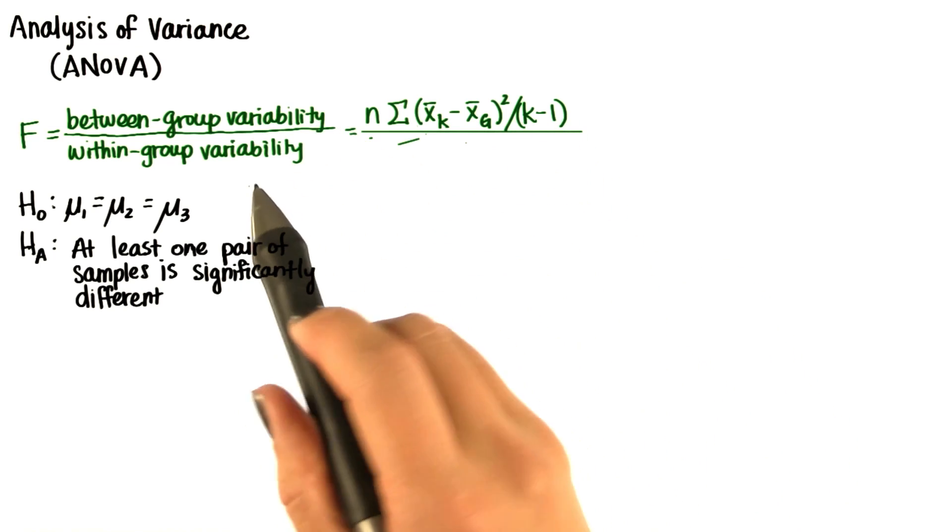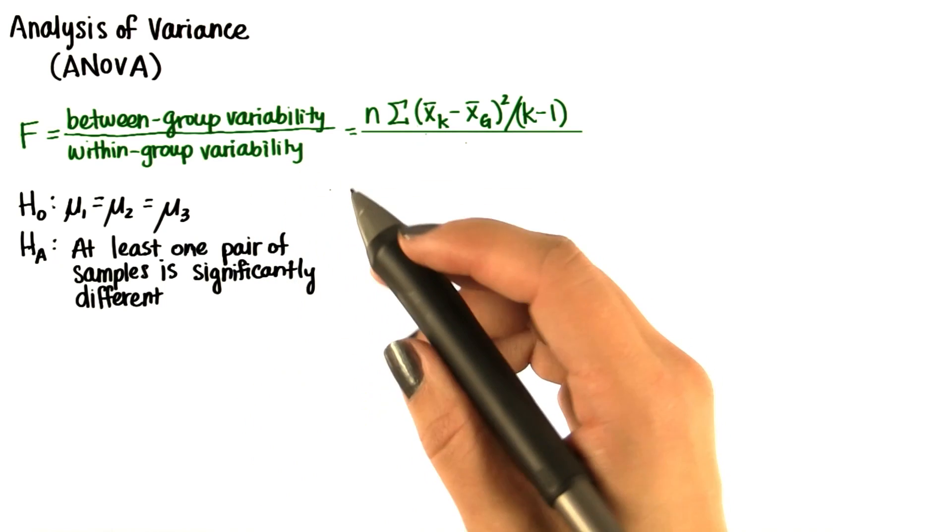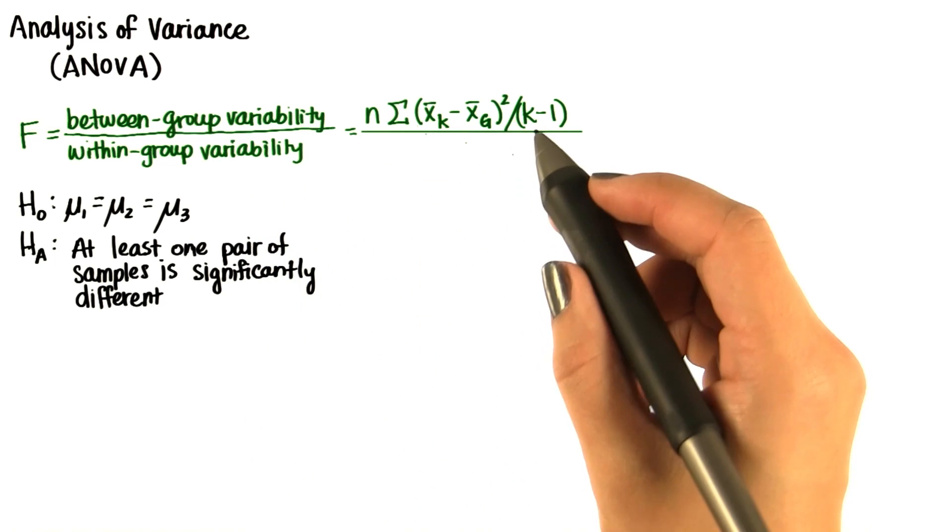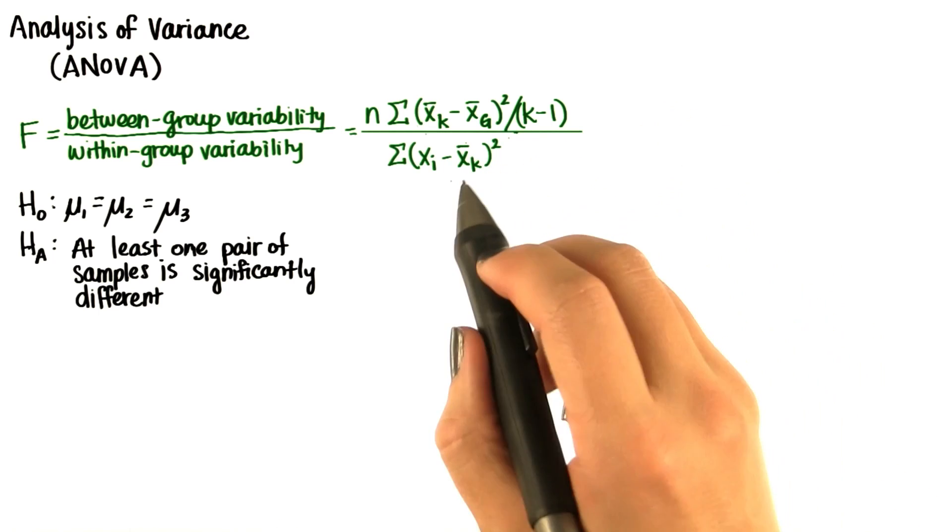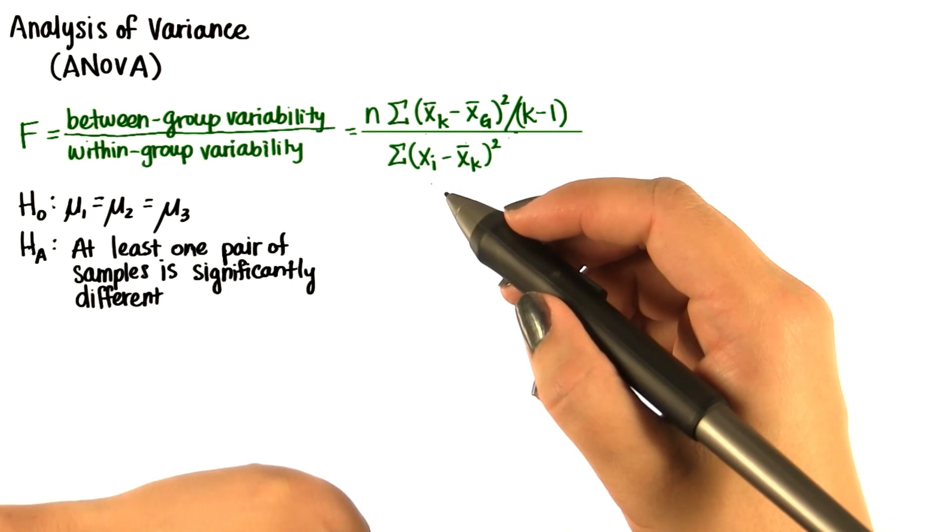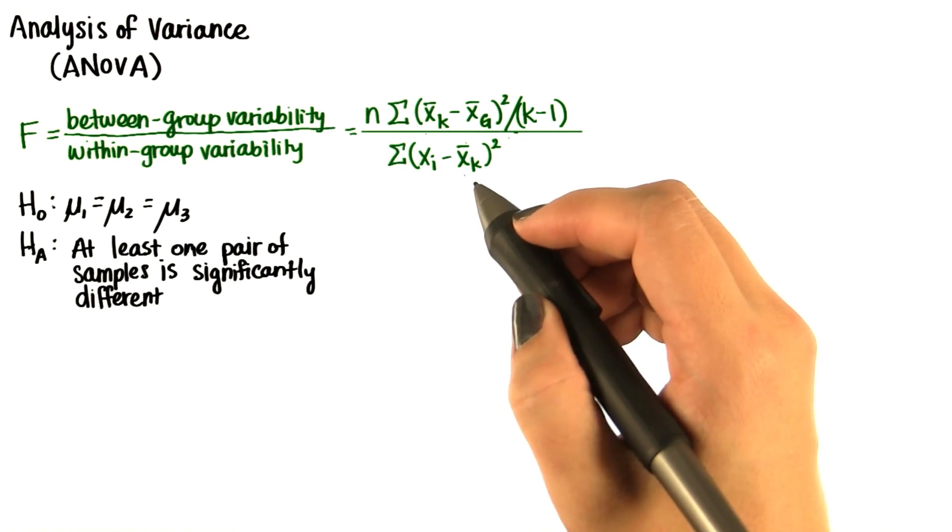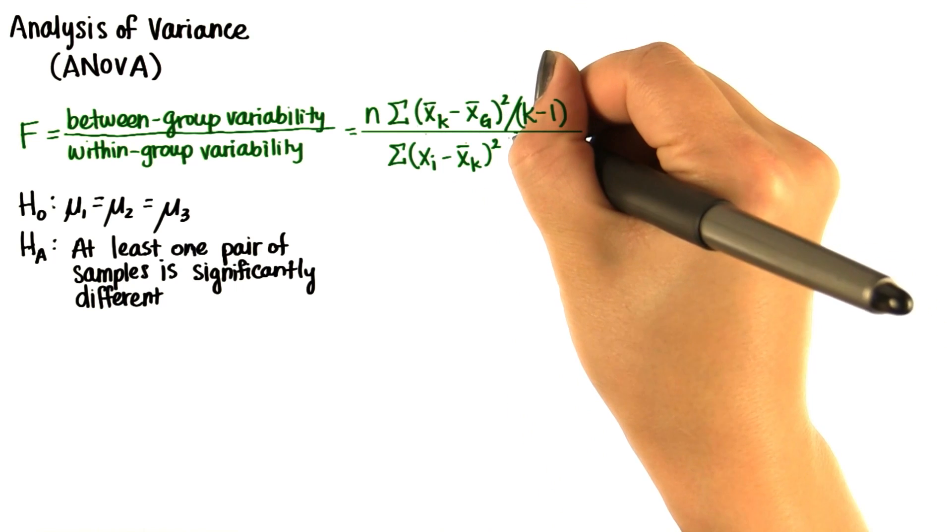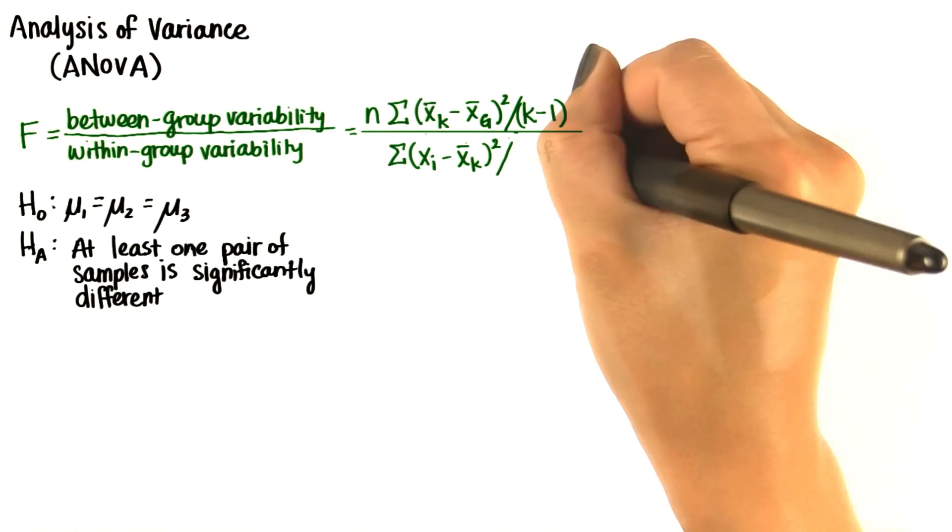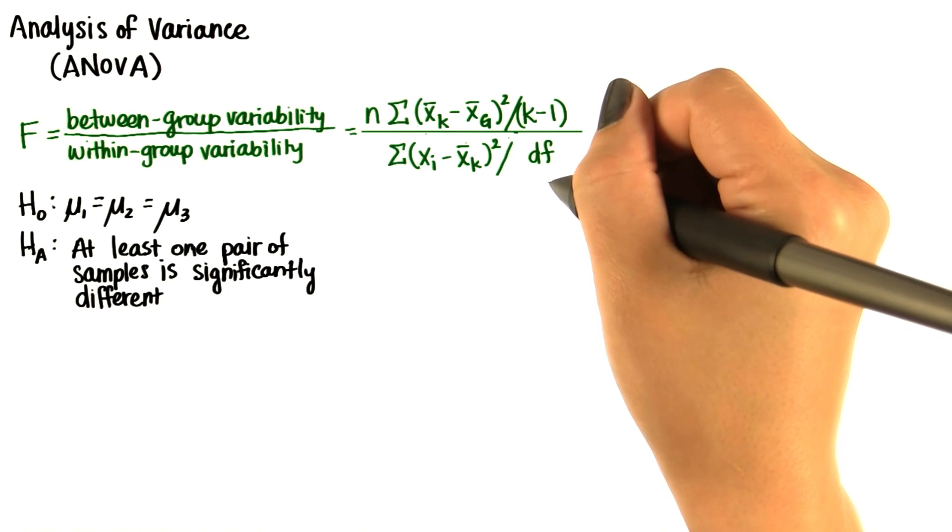We need to do the same for within group variability. We'll do something similar to the way we measured between group variability. We'll take the sum of squares for each individual sample from the mean of each sample, and then we divide by the degrees of freedom. What do you think the degrees of freedom is in this case?